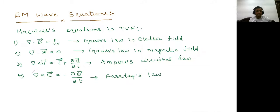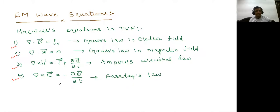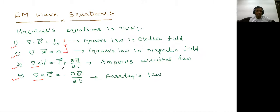Once we get these four Maxwell's equations in time varying fields, by using these equations we can generate the electromagnetic wave equations. Maxwell said that by using these four equations — particularly two of them — we can get the electromagnetic wave equations in various fields. And those equations will be used in the principle of antenna, specifically how to generate electromagnetic waves.